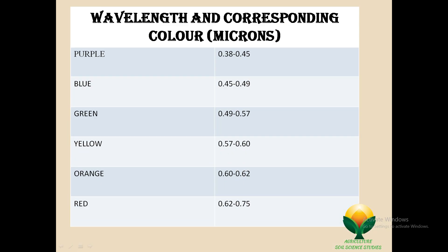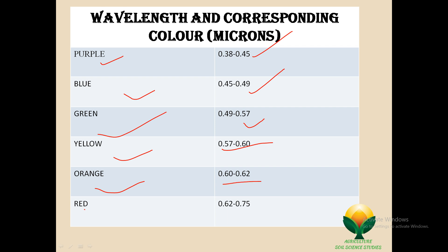Now, the wavelengths and their corresponding colors, measured in microns. Purple: 0.38 to 0.45. Blue: 0.45 to 0.49. Green: 0.49 to 0.57. Yellow: 0.57 to 0.60. Orange: 0.60 to 0.62. Red: 0.62 to 0.75.